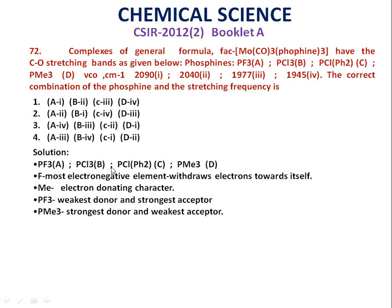The four ligands are given here: A, B, C, and D. For the first three ligands A, B, and C: fluorine is the most electronegative element in A, chlorine is also electronegative in B, and the phenyl group in C has a resonance effect. These electronegative elements and resonance effects withdraw electrons, so ligands A, B, and C become the weakest donors and strongest acceptors.